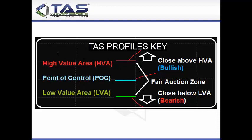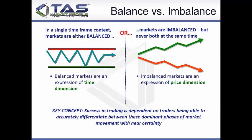Boiling it down further: we have a red line, a green line, and a blue line. We're going to focus mostly on the outer limits of the profile — that meaty part of the bell curve — which I'll call a balanced area or fair auction. When prices are in here, you basically have buyers and sellers in a balanced state. Balanced markets are an expression of time dimension; imbalanced markets — when price goes outside those balanced areas — are an expression of price dimension. Success in trading depends on accurately differentiating between these dominant phases with near certainty.